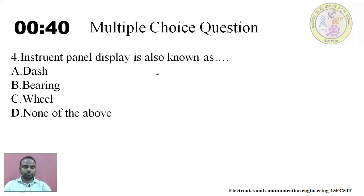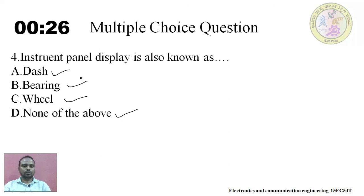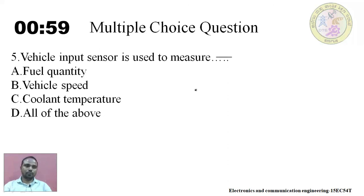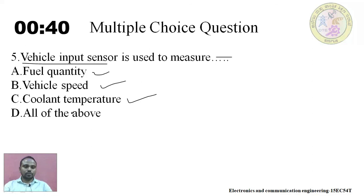Question four: the instrument panel display is also known as dash. Options: dashboard, bearing, wheel, or none of the above. The answer is dashboard. Question five: vehicle input sensor is used to measure dash. Options: fuel quantity, vehicle speed, coolant temperature, or all of the above. The answer is all of the above.